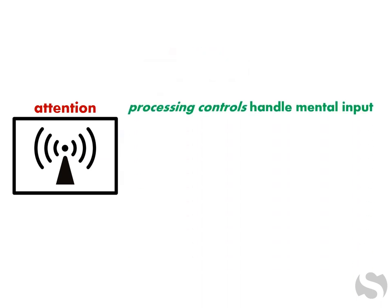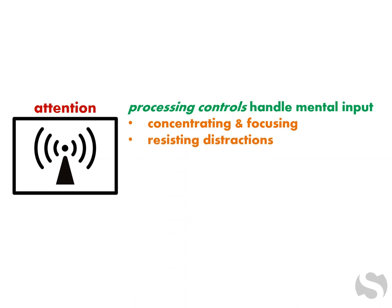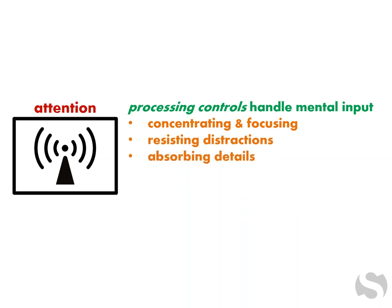One aspect of attention tracks and handles information streaming into the mind, like mental Wi-Fi. The attention processing controls handle mental input. They do several important things, like concentrating and focusing, resisting distractions, absorbing details, and shifting focus.